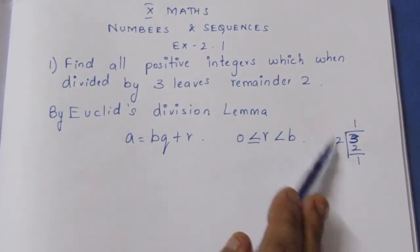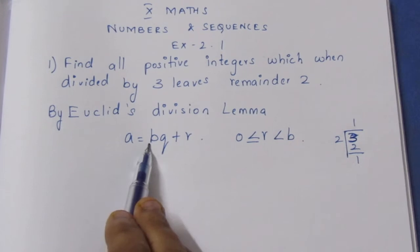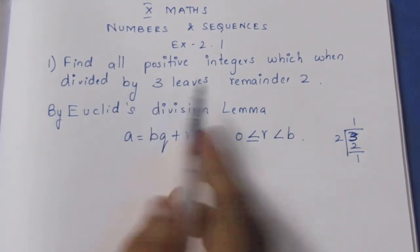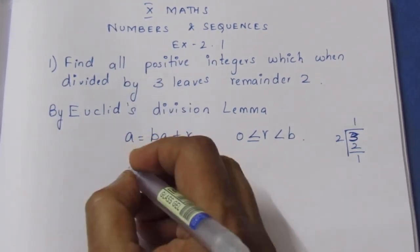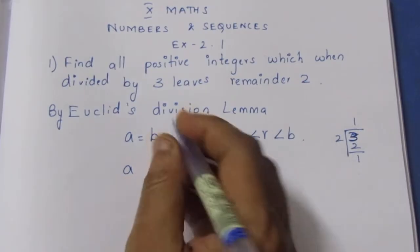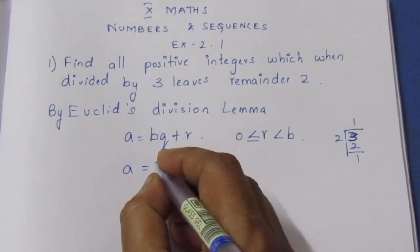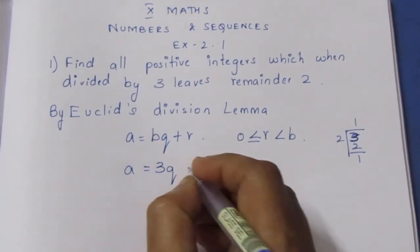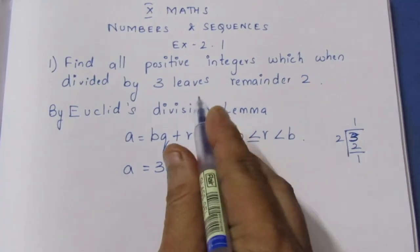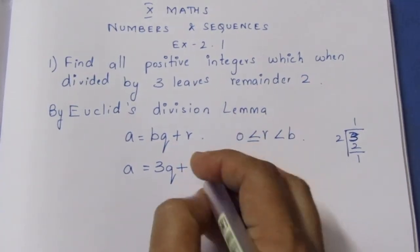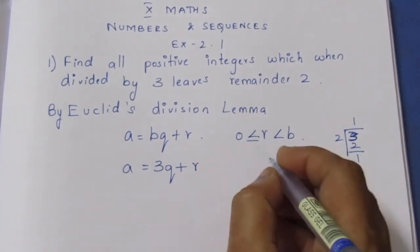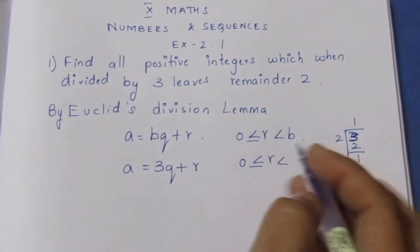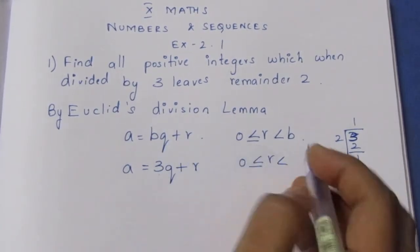According to this sum, if we divide by 3, then b is equal to 3. So a is equal to 3q plus r, where r is greater than or equal to 0 and less than b, which is 3.